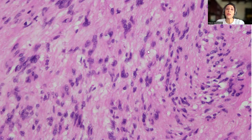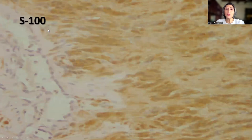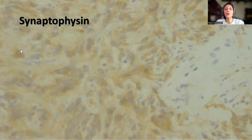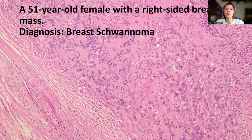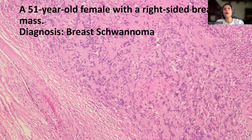We also have to confirm that this is a schwannoma. S100 was beautifully diffusely positive in the tumor, as was synaptophysin, which can sometimes be positive in schwannoma. So the final diagnosis of this beautiful case was a breast schwannoma. The patient was diagnosed in 2017, and up to date there is no evidence of recurrence — the patient is completely free. I hope you find this tip useful in your daily practice. Thank you.